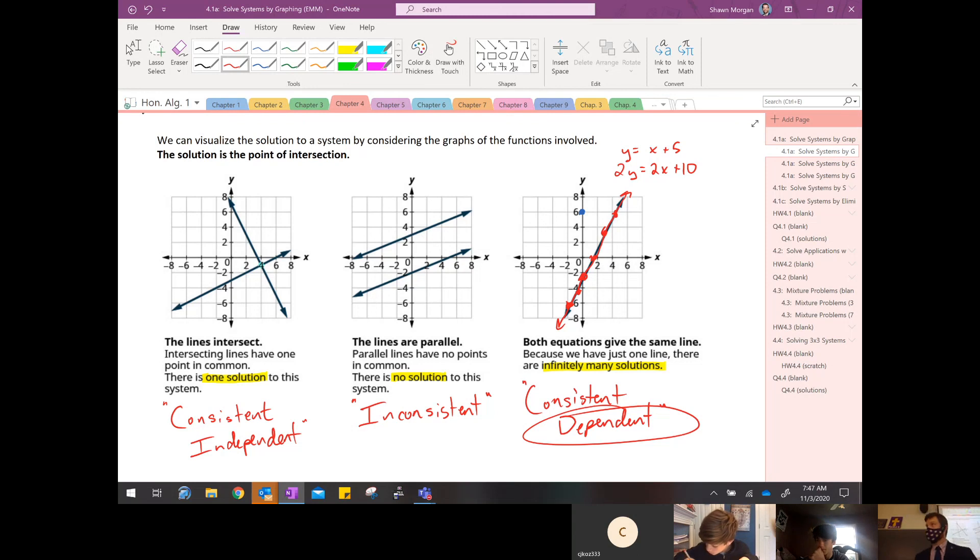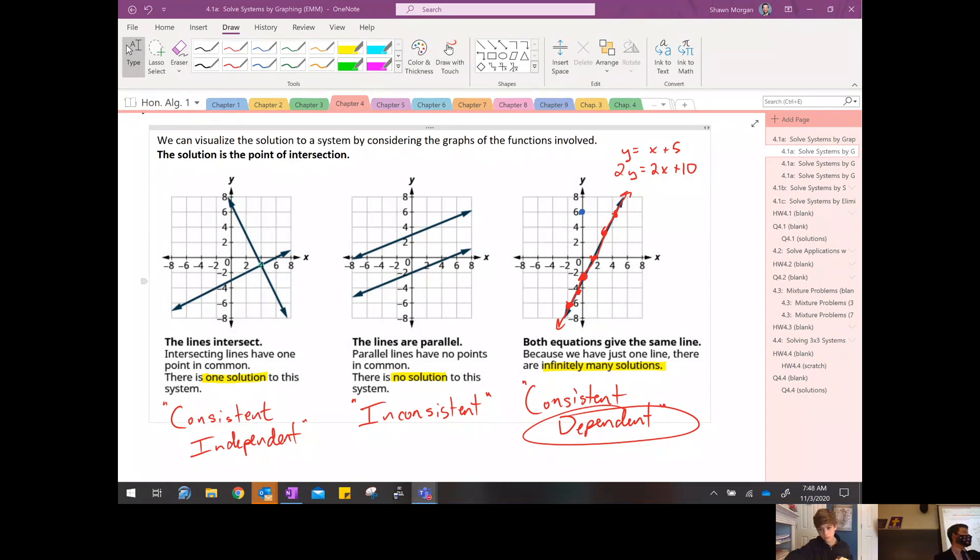Those three systems we need to be familiar with. Independent or consistent is the one where there's just one solution most often. Inconsistent is where there's no solution. And then dependent is where there's infinitely many solutions. Our job Thursday is going to be coming in and we're going to start graphing systems. We're going to get back into that y equals mx plus b slope and y-intercept. We're going to practice graphing and say, did these cross? And if so, where? That will be the solution that we find. Y'all have any questions for me before I dismiss you? Wonderful job today, fellas. We're going to have a nice orderly dismissal.